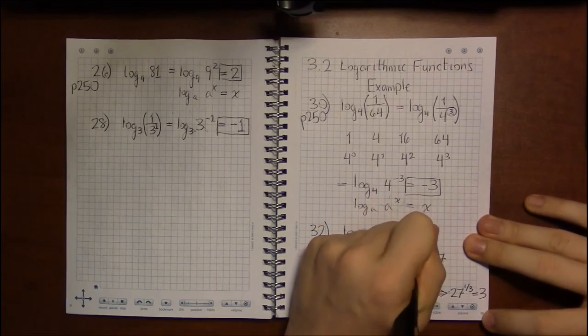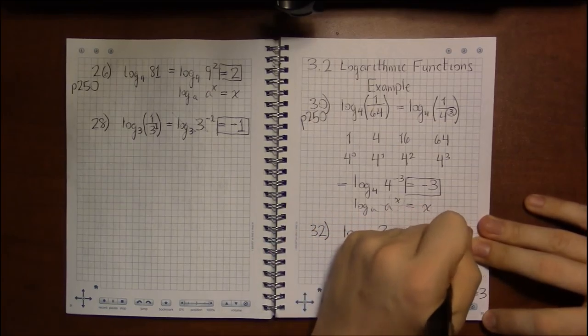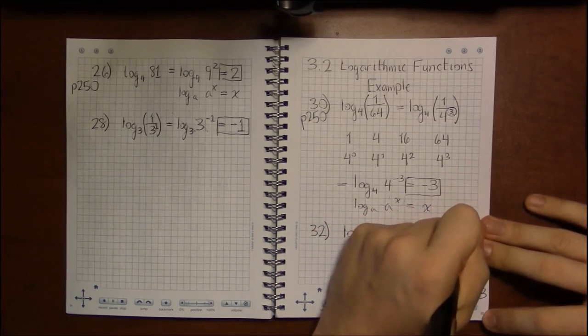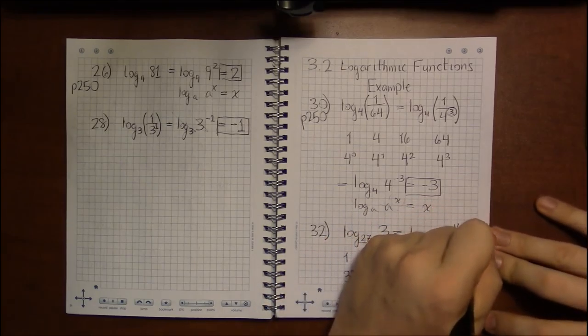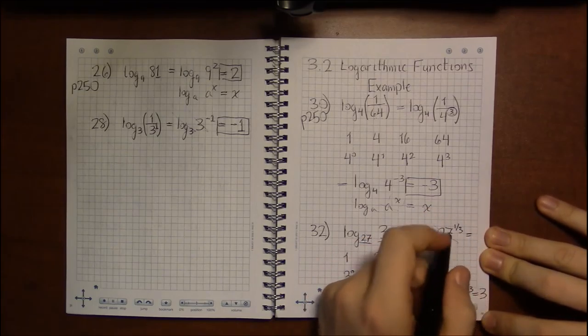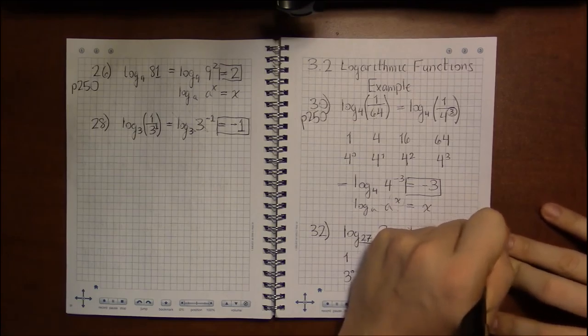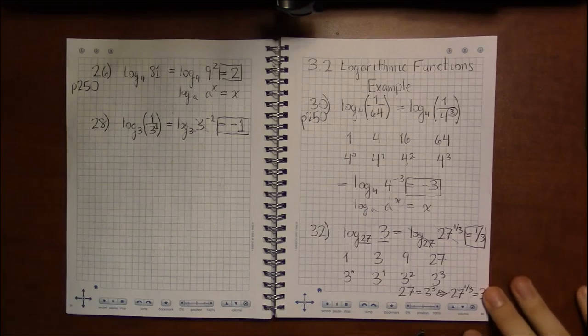So I can write 3 as 27 to the 1 third, or the cube root of 27. Then I can use this nice log property to say that the log base 27 and 27 to whatever cancel and leave me with the exponent, which is in this case simply 1 third.